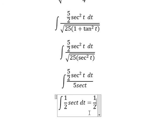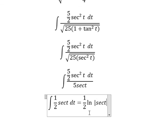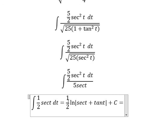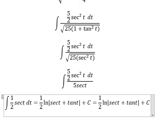Now we integrate one over two secant t dt, and we get one over two times the natural log of the absolute value of secant t plus tan t, plus the constant C in terms of t.